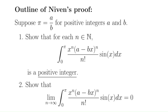So here's the outline of the proof. We're going to start by supposing that pi is rational — so pi can be written in the form a over b, where a and b are positive integers — and we'll show that this assumption leads to a contradiction. The proof has two steps. First, we're going to show that this integral is always a positive integer for every N.